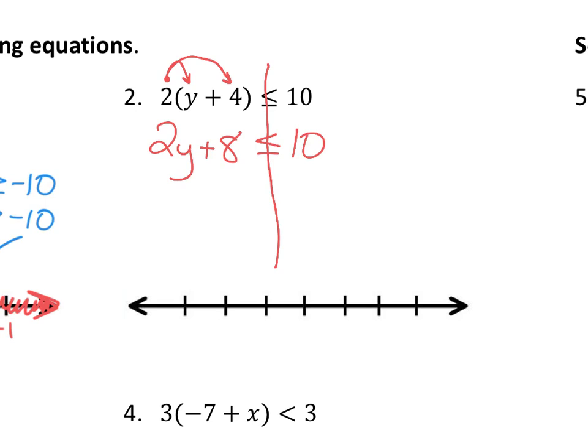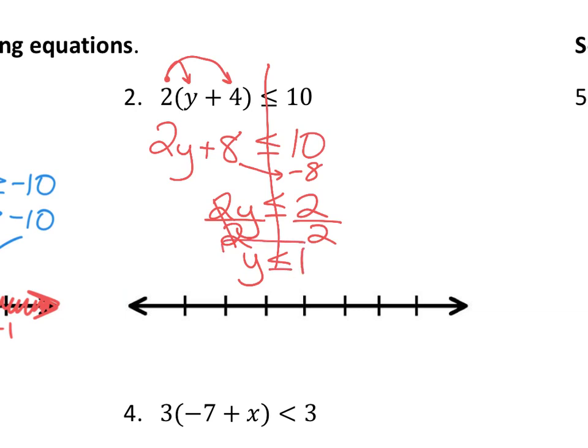Once we get through the distribution step, we move on to inverse operations. Do I move the 2 in front of the y, or the 8 that's added? I move the 8 first — subtract 8 from both sides. This gives us 2y less than or equal to 2, since 10 minus 8 is 2. The last inverse operation is dividing by the 2 in front of y, giving us y less than or equal to 1. That's the solution set.